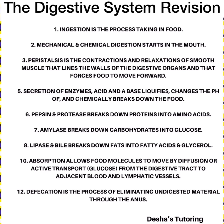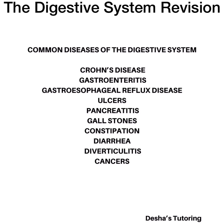Lipase and bile break down fats into fatty acids and glycerol. Absorption allows food molecules to move by diffusion or active transport — in the case of glucose — from the digestive tract to adjacent blood and lymphatic vessels, also known as lacteals. Lastly, defecation is the process by which we eliminate undigested materials through the anus in the form of feces.